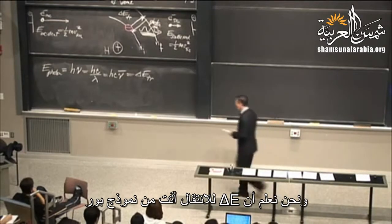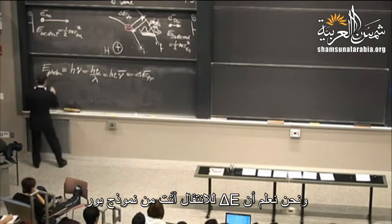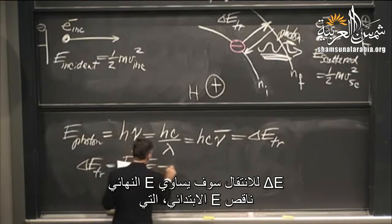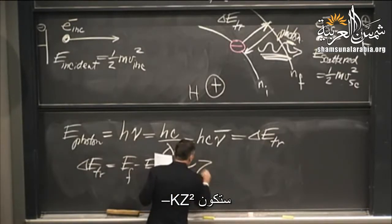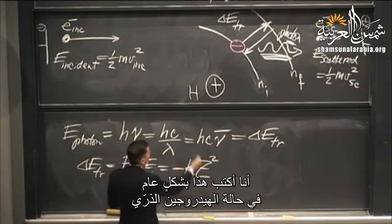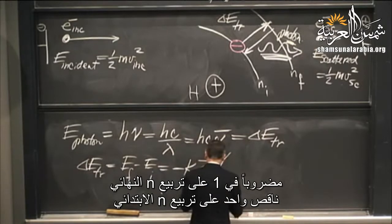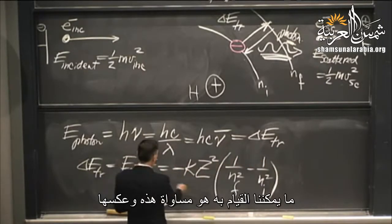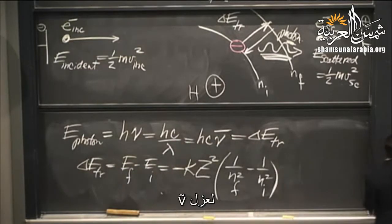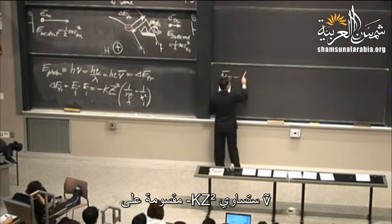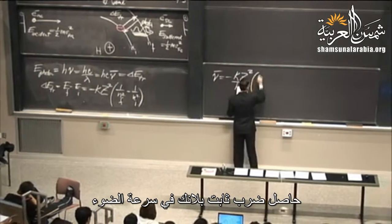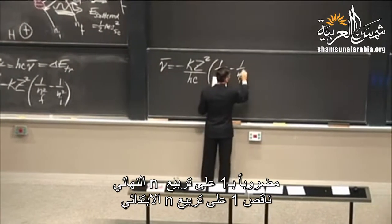We know that delta E of the transition is given by the Bohr model: delta E equals E_final minus E_initial, which equals minus k z squared times (1 over n_f squared minus 1 over n_i squared). We can equate these and isolate nu-bar. Nu-bar then equals minus k z squared over the product of the Planck constant and the speed of light, times (1 over n_f squared minus 1 over n_i squared).